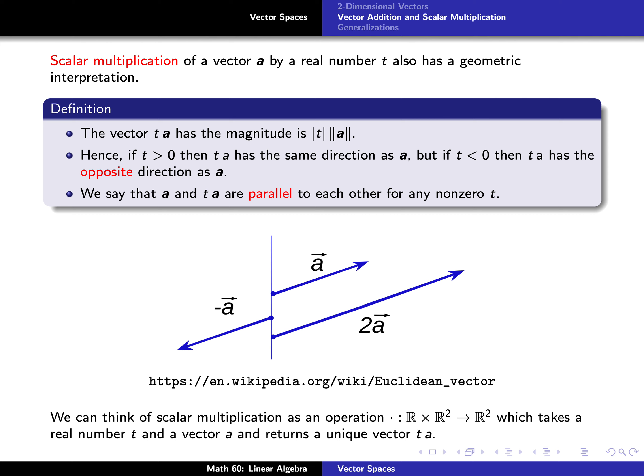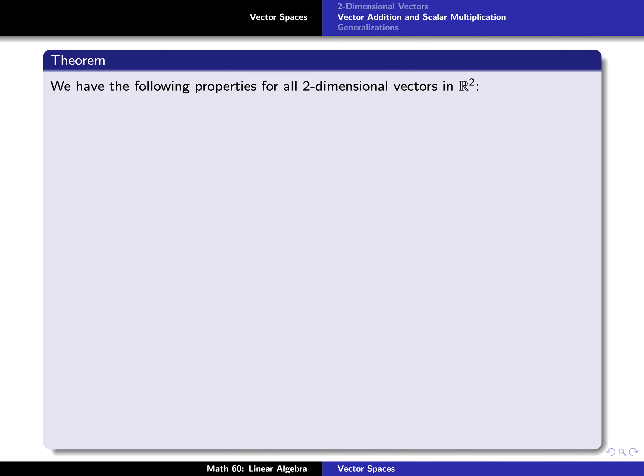Just like before, we can think of scalar multiplication as an operation that takes a real number and a vector and returns another vector — it takes a real number t and a vector a and returns the unique vector t times a. Now, with these two operations — namely vector addition and scalar multiplication — we have the following eight properties for two-dimensional vectors.